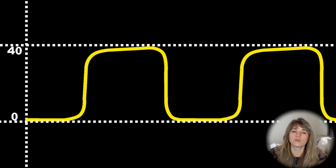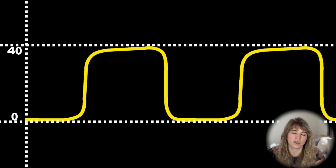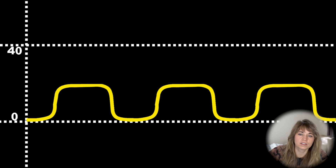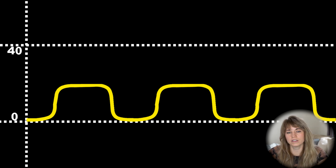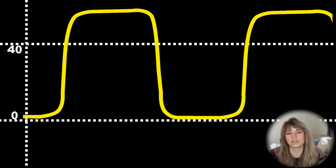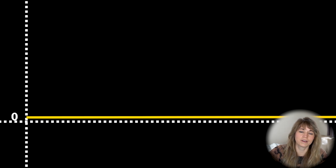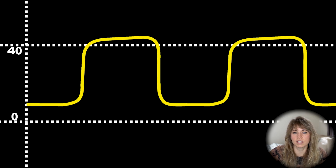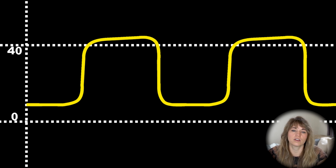Now let's review some capnogram waveforms. A normal capnogram shows all four phases with a slight positive incline in phase three, and you can evaluate your alpha and beta angles. Hyperventilation shows an increased respiratory rate and slightly decreased end tidal CO2. Hypoventilation shows a slower respiratory rate and a slightly increased end tidal CO2. Apnea is easy to recognize as a lack of breathing. Rebreathing is seen when phase zero does not return to a baseline of zero, instead reflecting an inspired CO2 level — this can be seen with an inadequate gas flow rate.